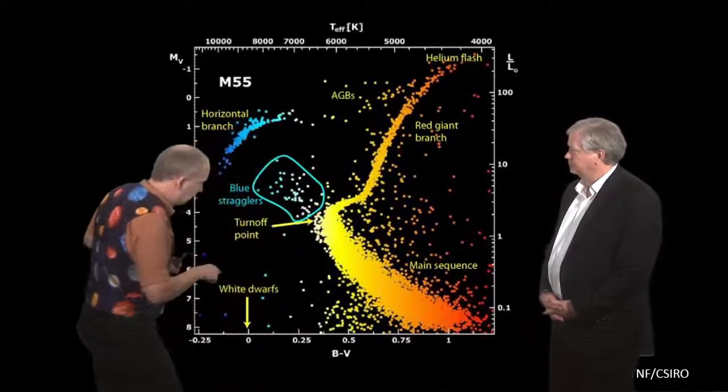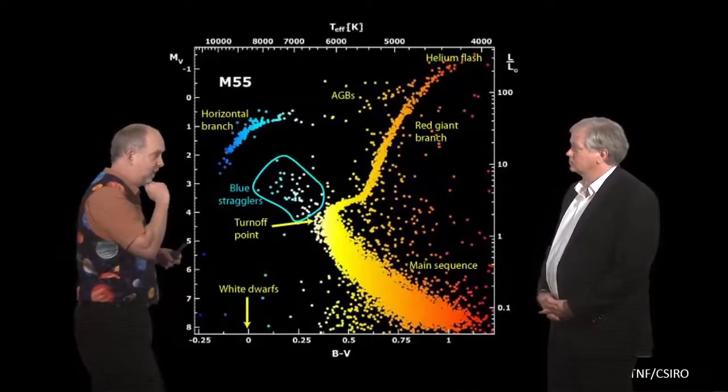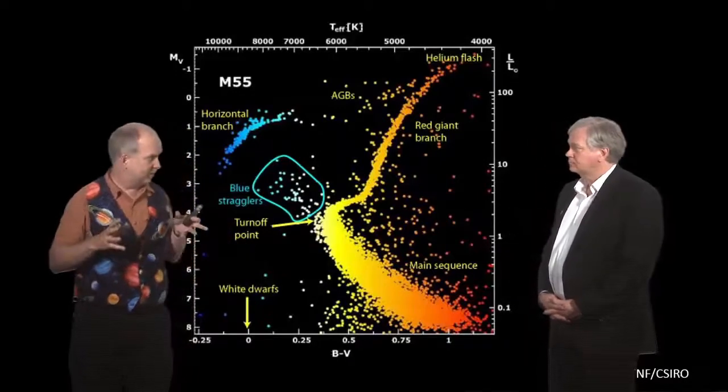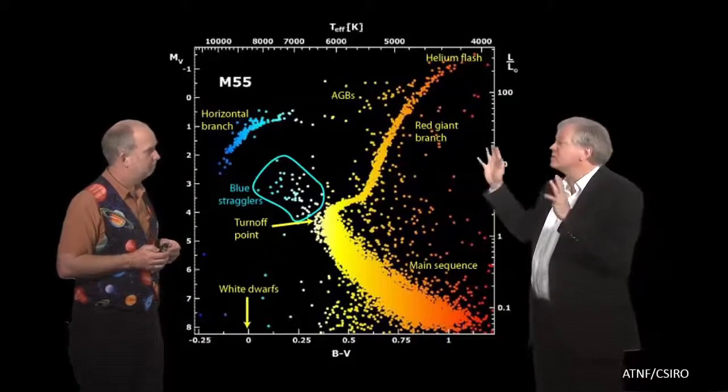However, this HR diagram is not for just a bunch of stars in our galaxy. It's for a globular cluster, M55. In a globular cluster, all the stars formed in one burst right at the beginning, pretty much. Yeah, so these stars are probably more than 10 billion years old.